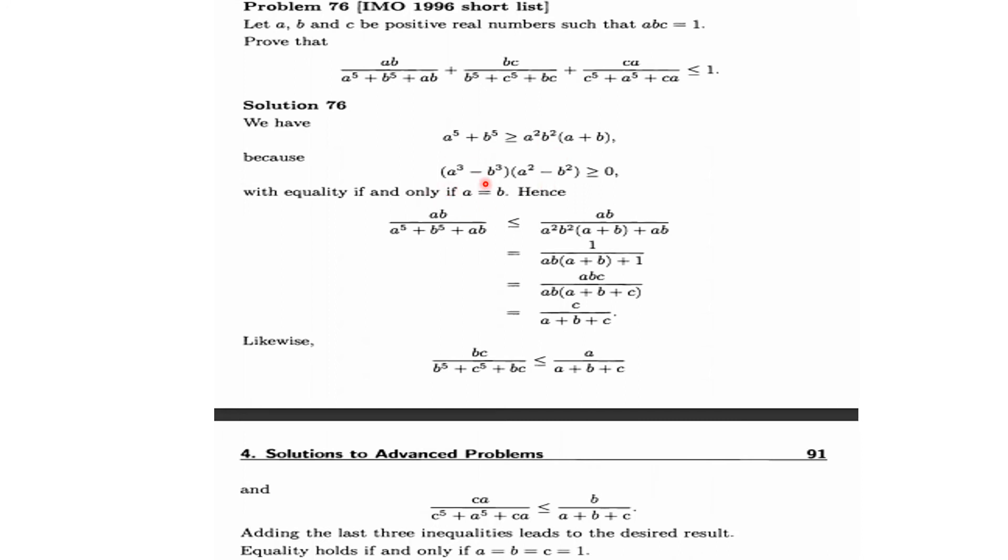When you open the expression, you can use this property. If we reduce the denominator of each fraction, obviously the whole quantity will increase. The value of 5 divided by something will be left, and we'll have simplified denominators.